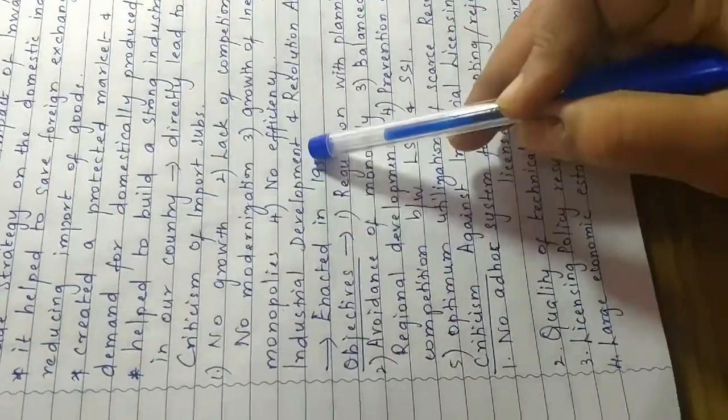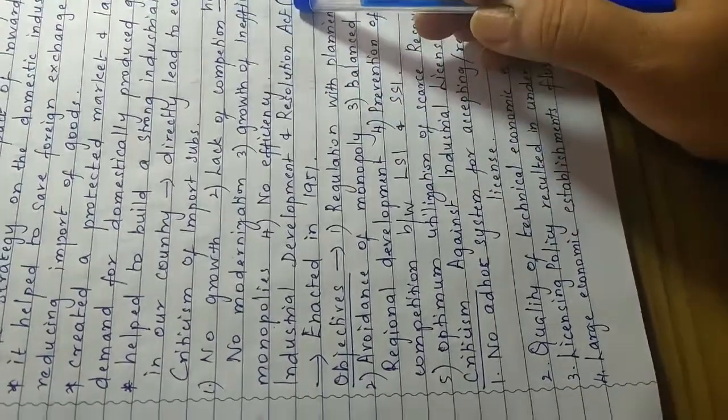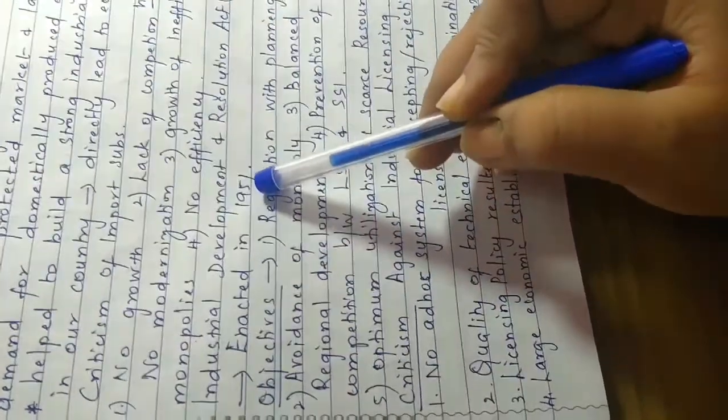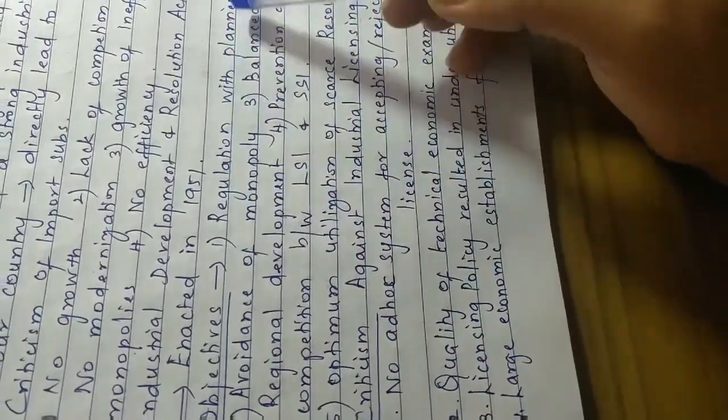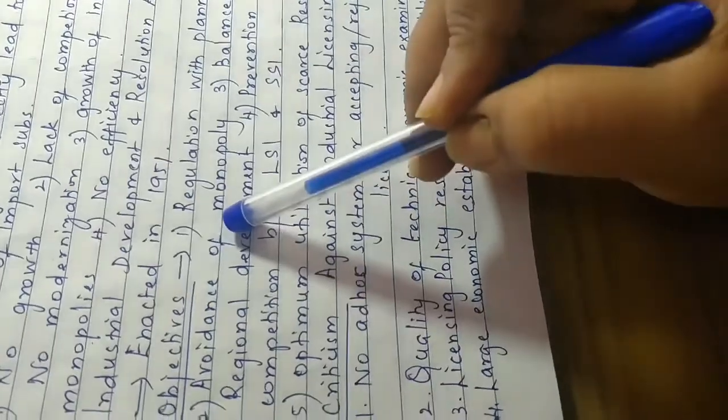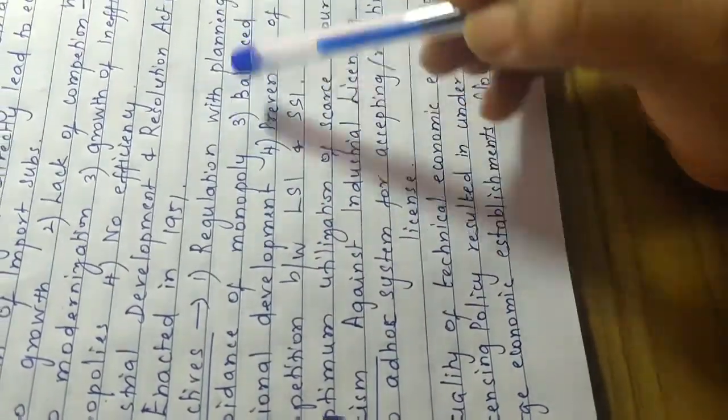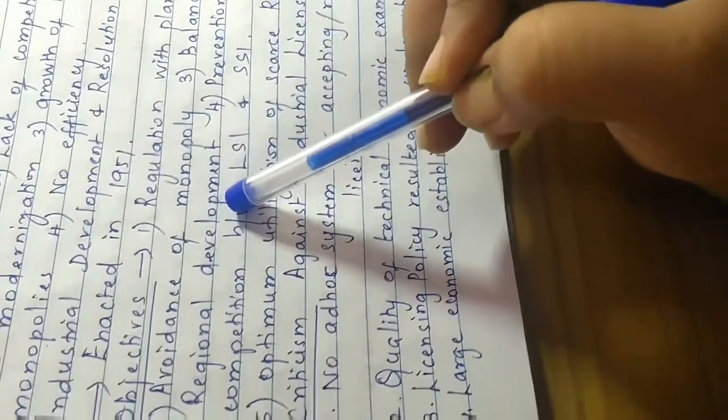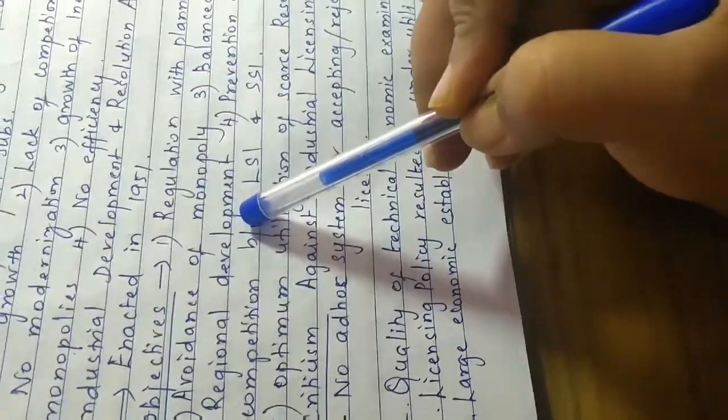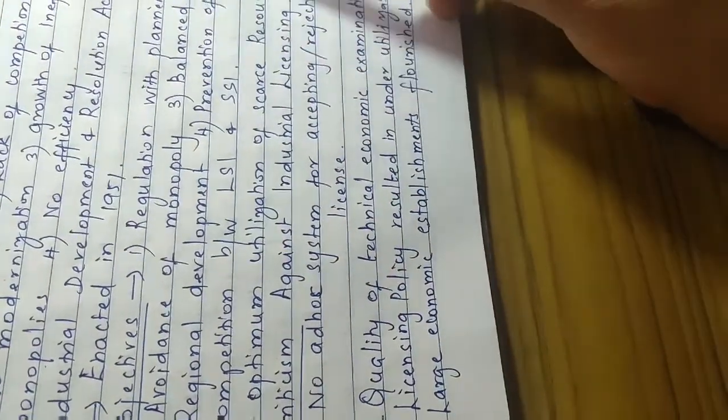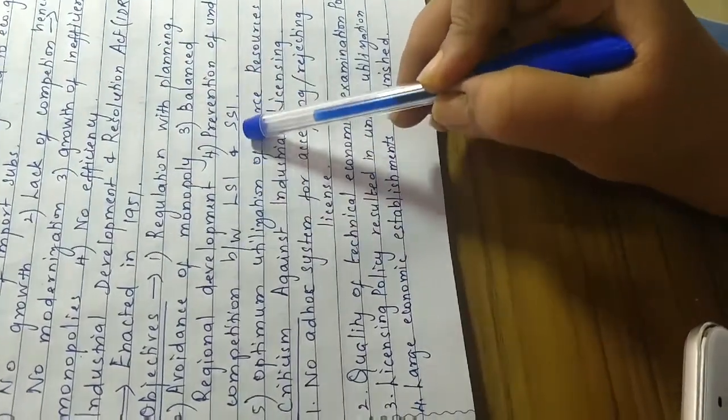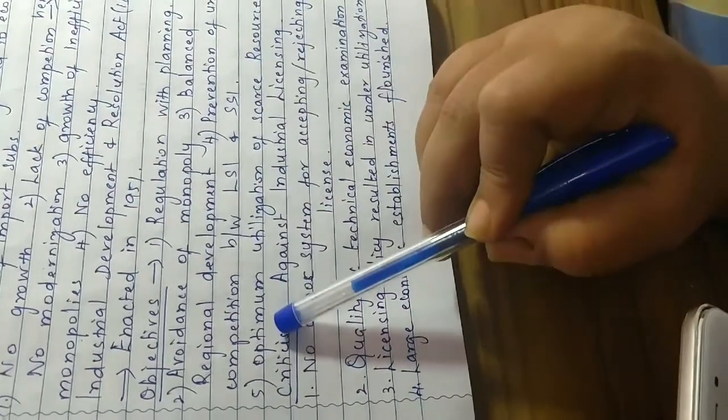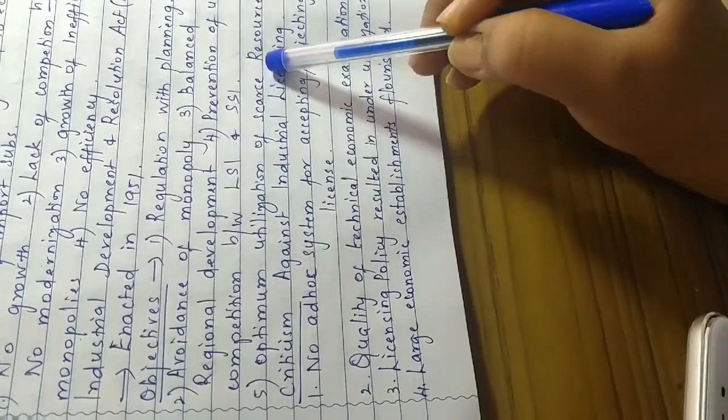Industrial Development and Resolution Act, IDRA. It was enacted in 1951. Its objectives are regulation with proper planning, avoidance of monopoly, balanced regional development to promote parity among all the states, prevention of undue competition between the large scale industry and the small scale industry, and optimum utilization of scarce resources.